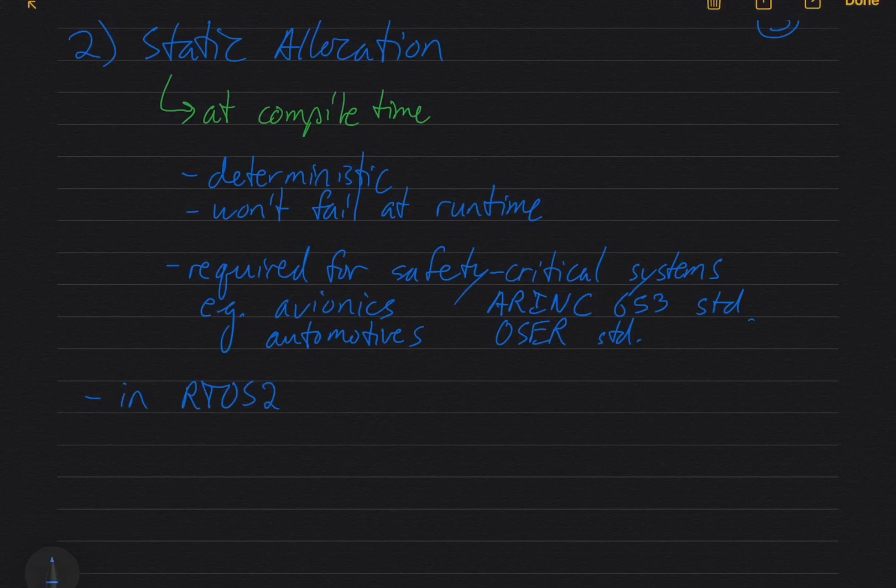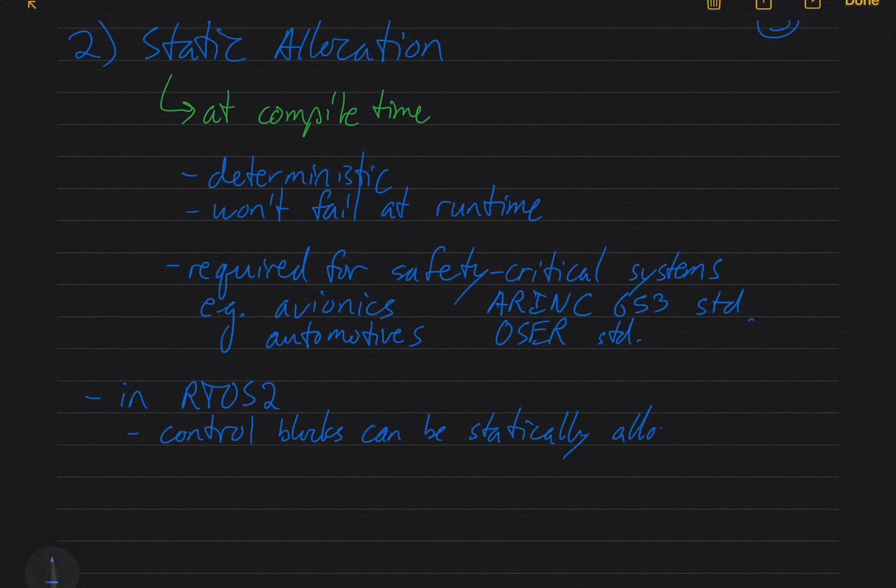Every operating system object has a control block. So mutexes, semaphores, threads, event flags, all of them have control blocks. Control blocks can be statically allocated.